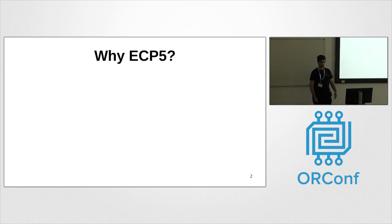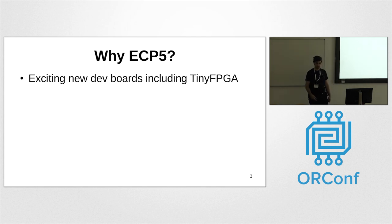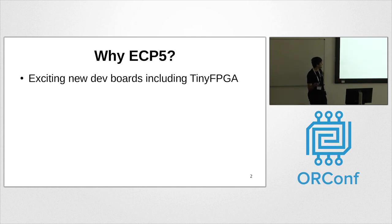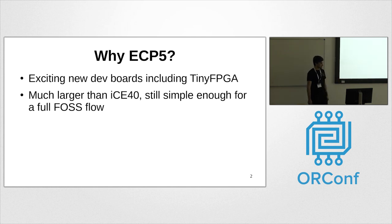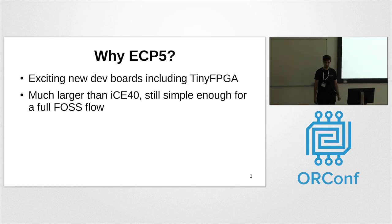One of the questions is: why choose the ECP5 FPGA over other parts? There are lots of exciting new ECP5 development boards coming out, for example the TinyFPGA EX, the ULX3S, and Al here is working on a BlackIce with ECP5 too. The ECP5 is much larger than the ICE40, so that opens up a lot more possibilities — you could even run RISC-V Linux on an ECP5 FPGA.